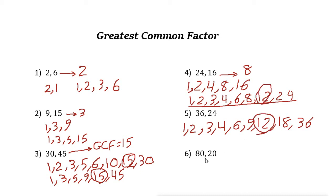For 80 and 20: if one number is a multiple of another number, then the smaller number is the greatest common factor. So the greatest common factor of 80 and 20 is 20.